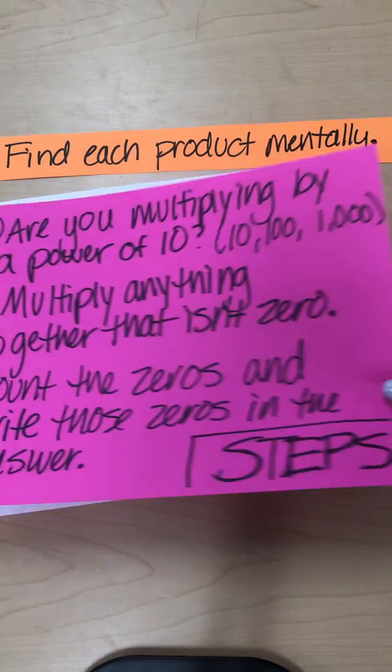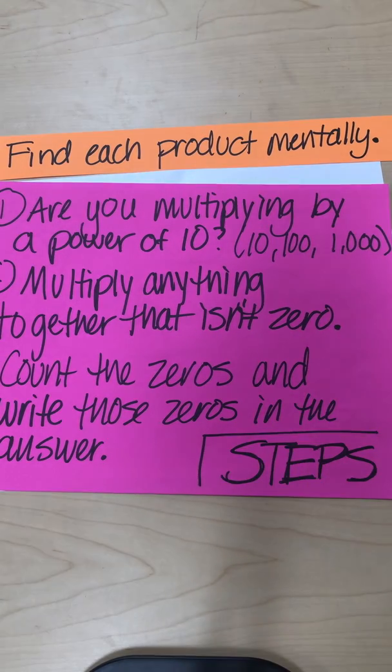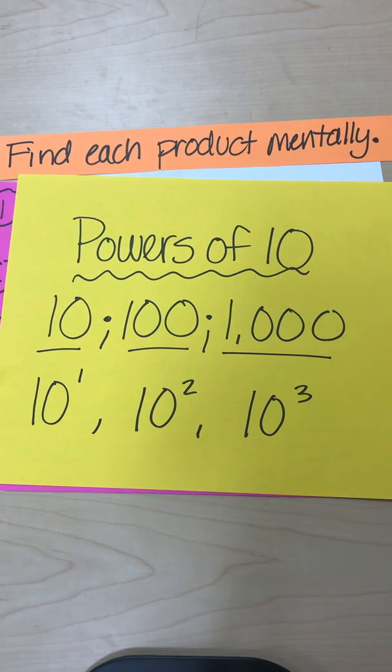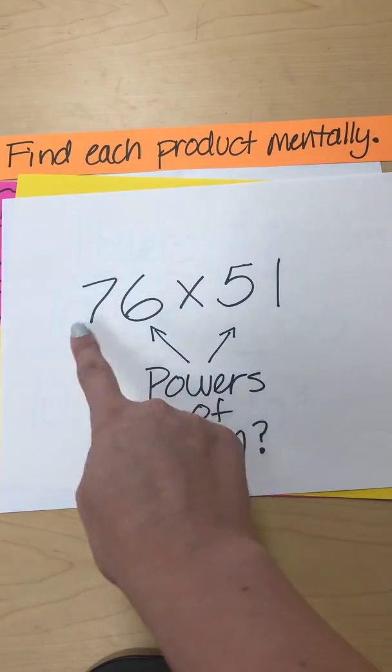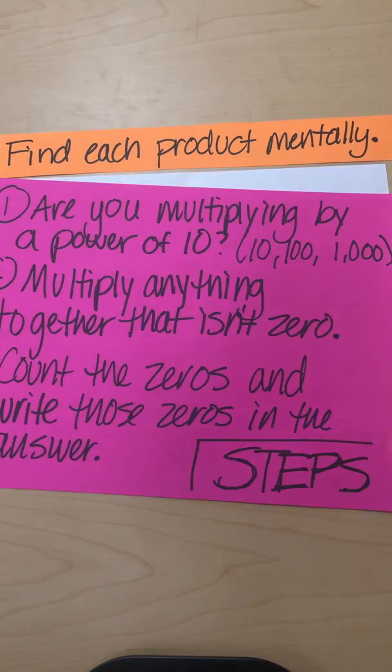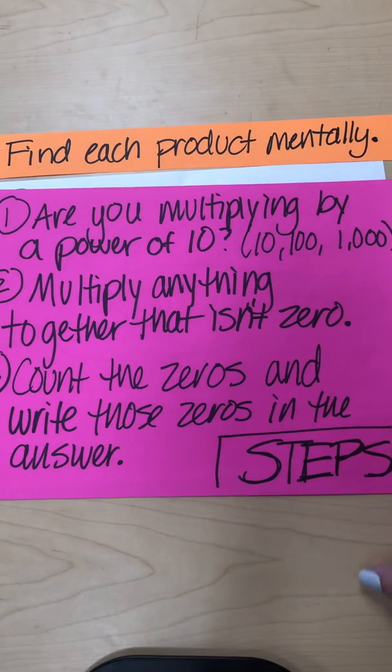Remember, these are our steps. It works for anything that is a power of 10, or anything that like 10 goes into, or 100, or 1,000. It doesn't work for numbers like this. We don't see any zeros on those. So 10 doesn't go into those. We can't use the pattern on that. If you remember this pattern, it will help you a lot with today's assignment. Good luck.